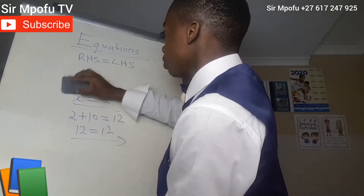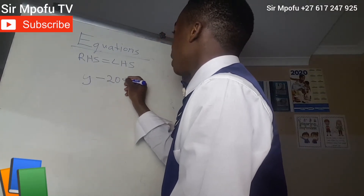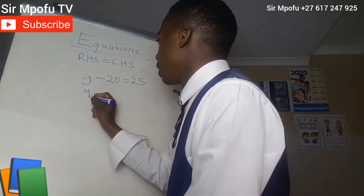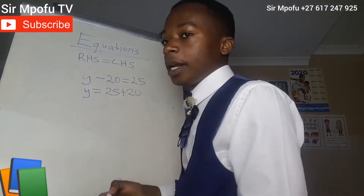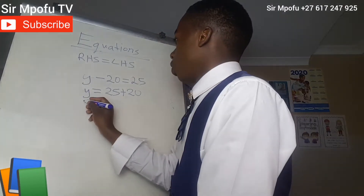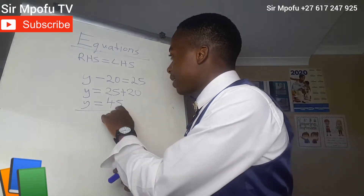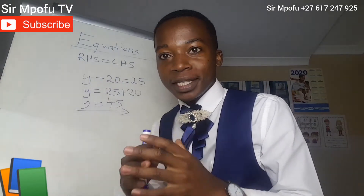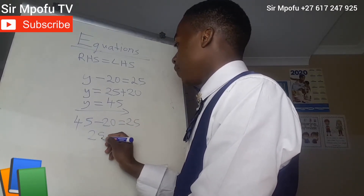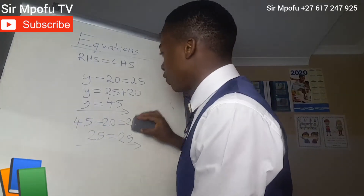Let's do another example. Let's say you are given y minus 20 is equal to 25. Change side, change side. Y equals 25 plus 20. Remember, 20 is having a negative sign on this side, so if it goes to the other side it's going to have a positive sign. Y equals 45. To prove: 45 minus 20 must equal 25 — 25 equals 25. This means you are 100% correct. There is no equation that you cannot prove.